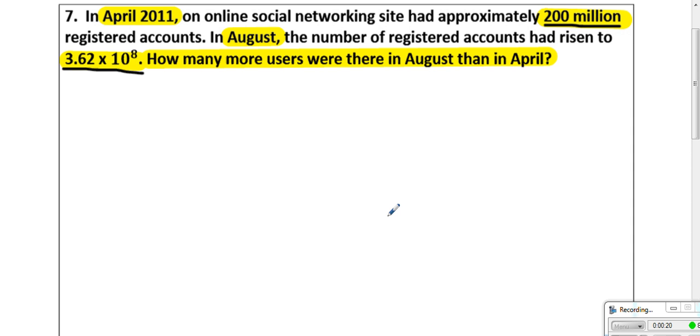It says in April, an online social networking site had approximately 200 million registered accounts. 200 million, first of all, you have to know how to write 200 million, so use commas and make sure that you have 200 million, that's 200 million.